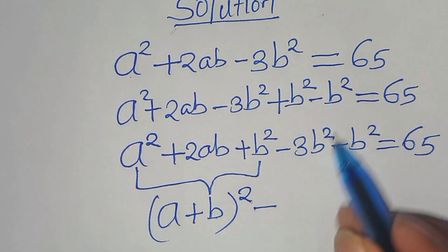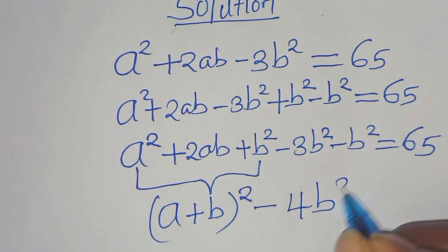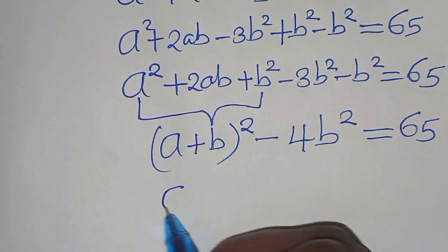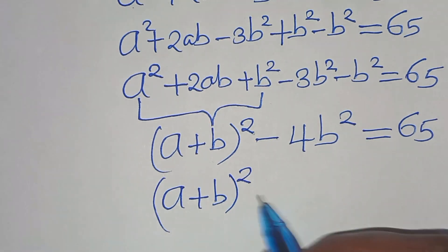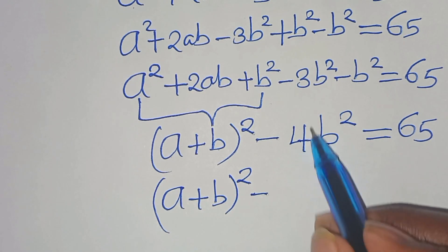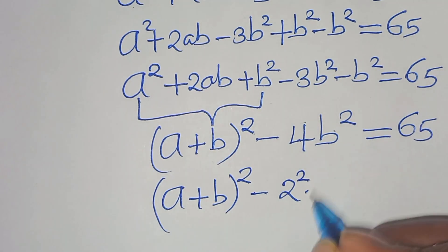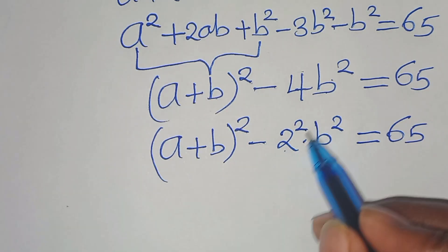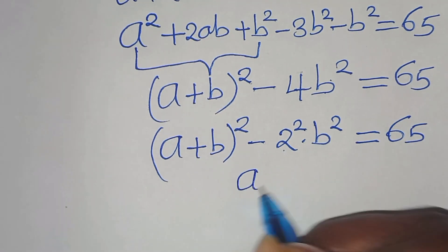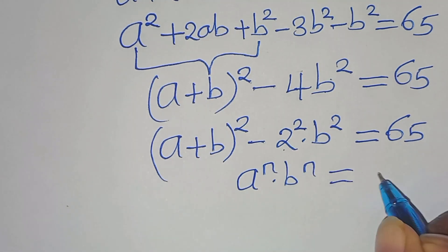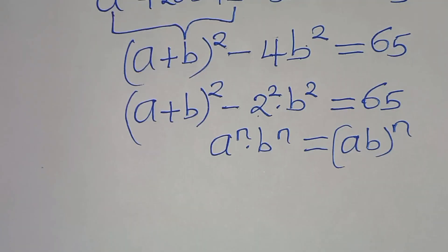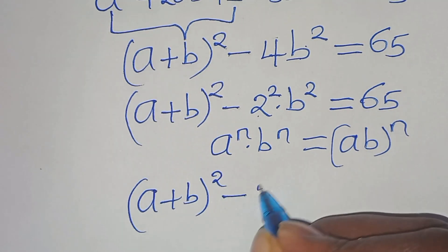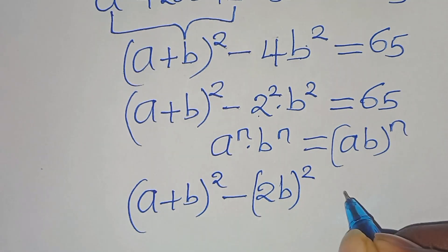So we have a plus b squared minus 4b squared, equal to 65. We can express this as a plus b squared minus 2 times b raised to the power of 2, equal to 65.